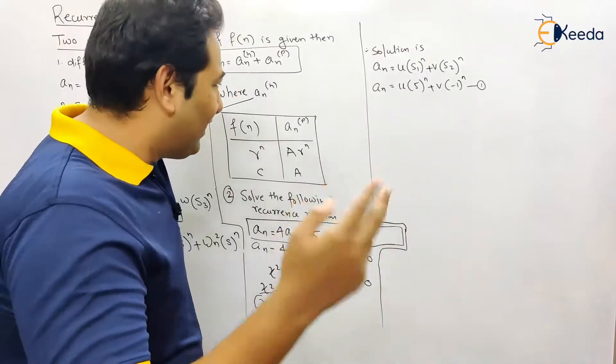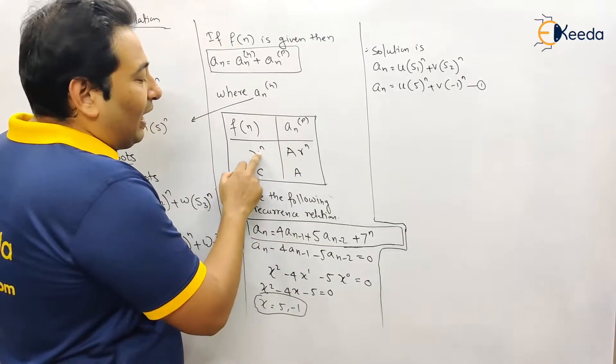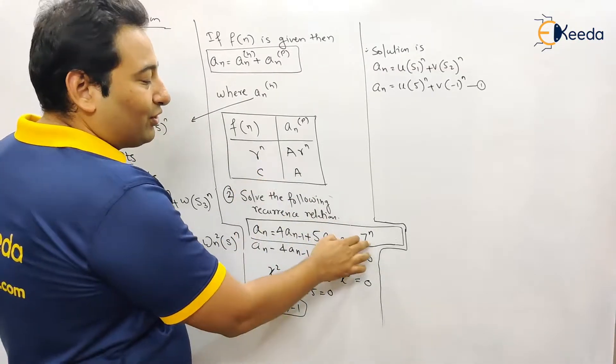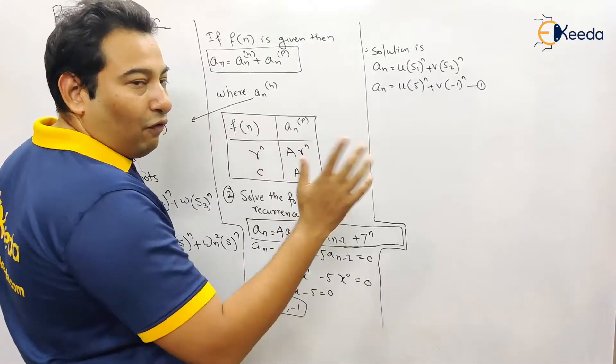So what do you mean by f of n? See, f of n can be of two categories. Either it can be r raised to n, something like this, or it can be a constant. Whatever without a_n is your f of n.